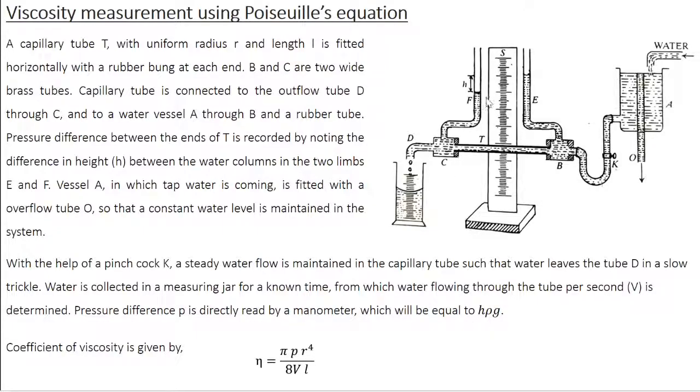Here all the parameters are known, P equals H rho G, which you can measure. R is the radius of the tube, which you can experimentally measure using a microscope. V is volume per unit time measured using the measuring jar, and L is the length of the capillary tube. From all these parameters, you can calculate viscosity of the given fluid.